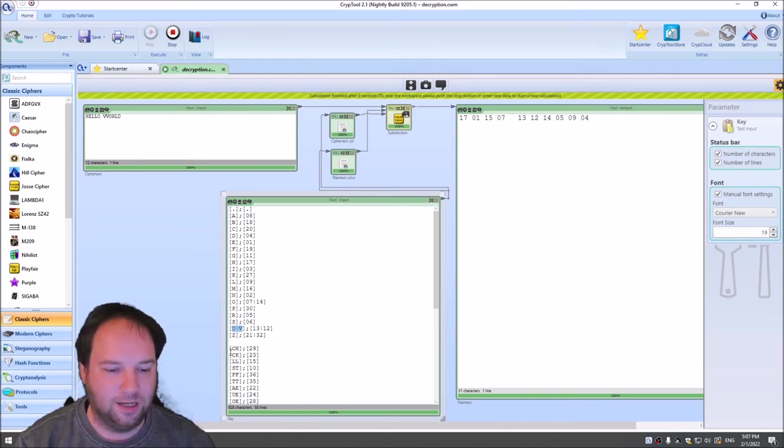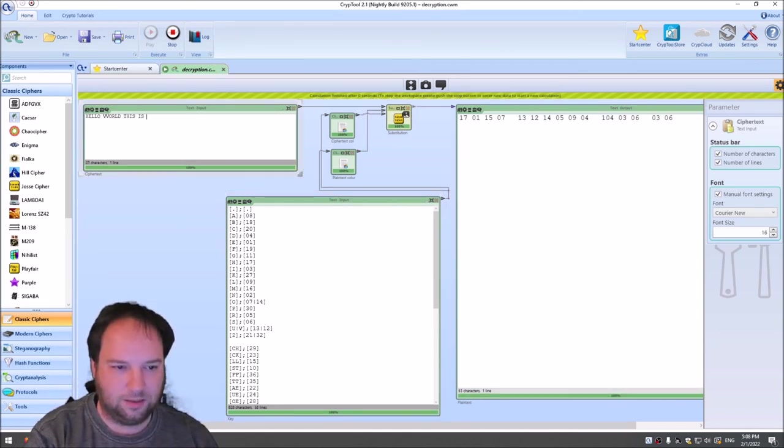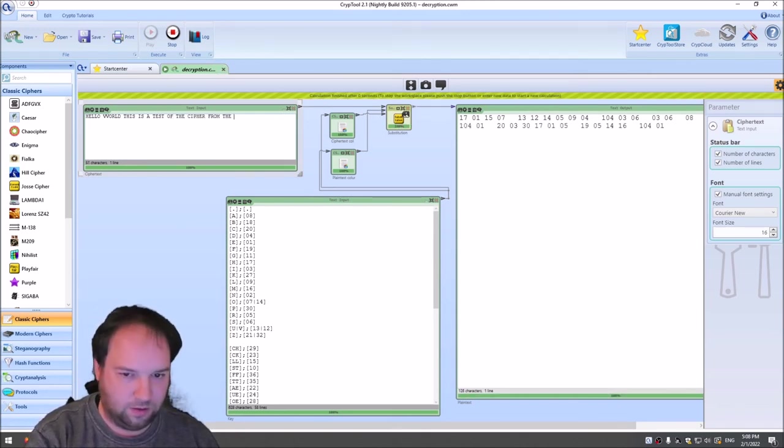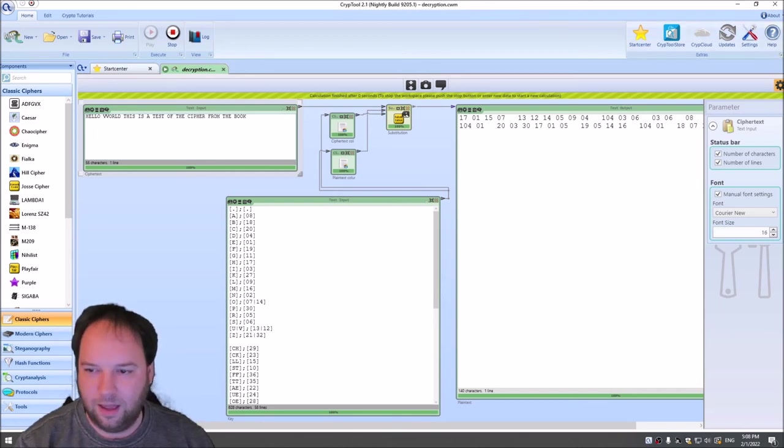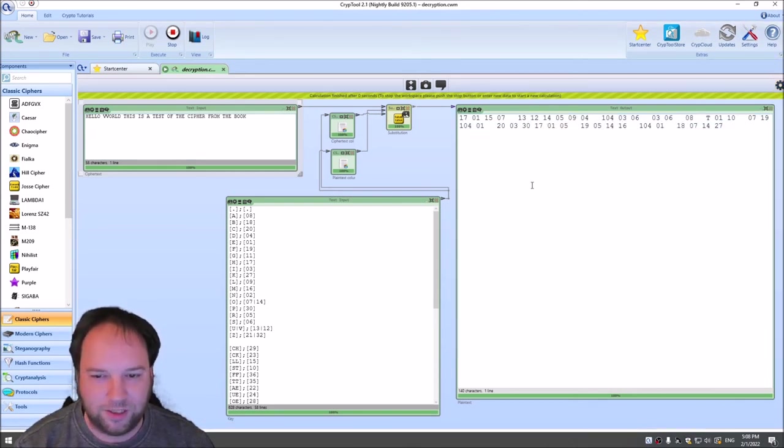So when we add this pipe symbol here, we can say, okay, I want to have the V and the U also as these numbers. And the nice thing with this component is we have U and V, 13 and 12. So it first chose 13 for encryption and then 12. And then we can just write this is a test of the cipher from the book. And we can actually use the original cipher from the book. Okay, we don't have the original symbols. That's clear. But we can use the transcribed numbers here to create the same cipher as with the book.